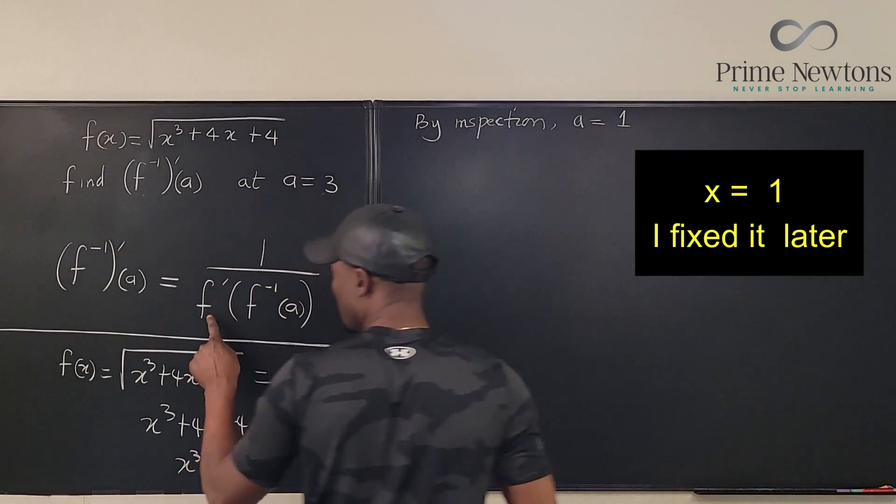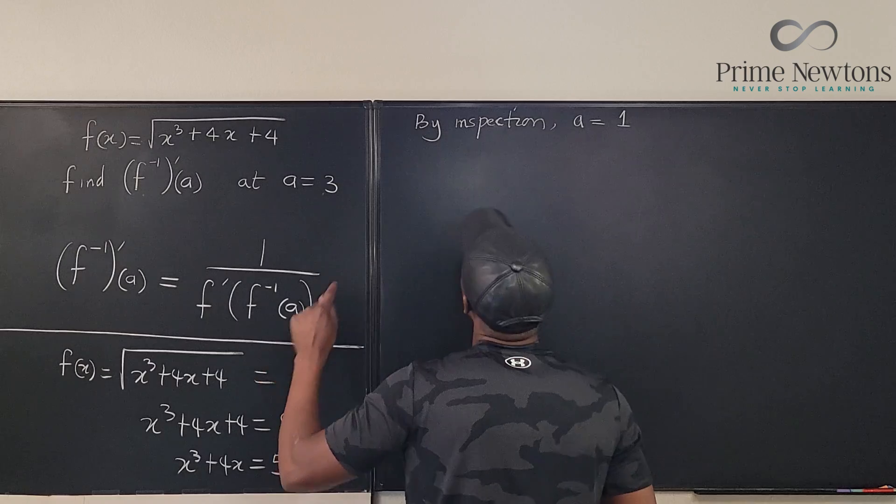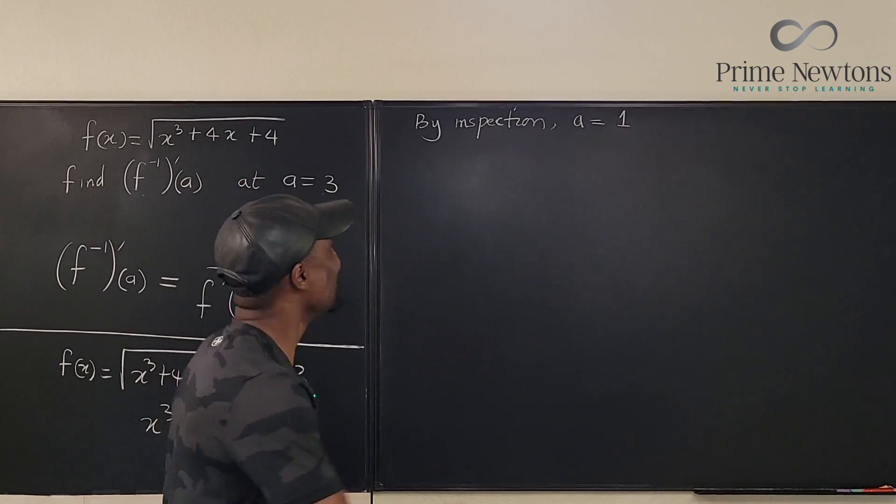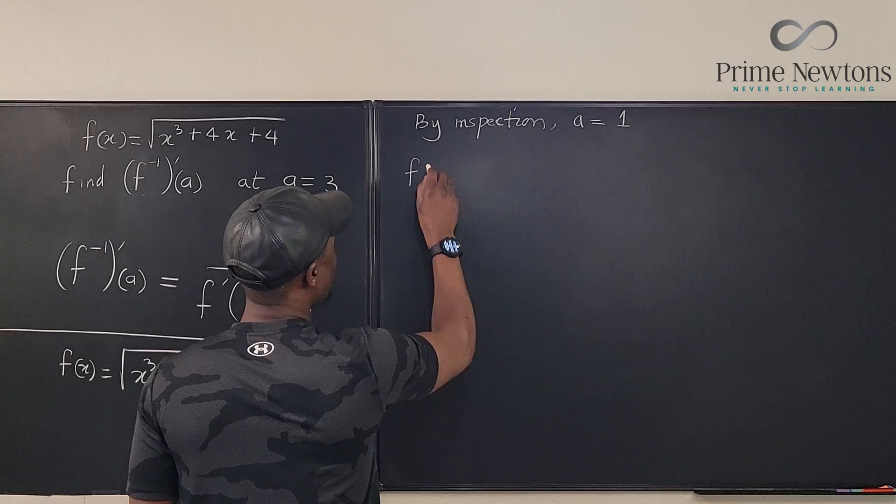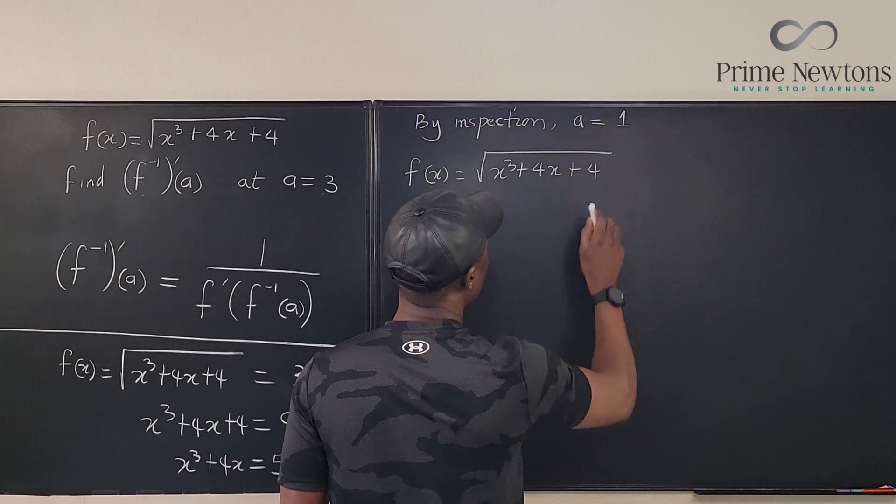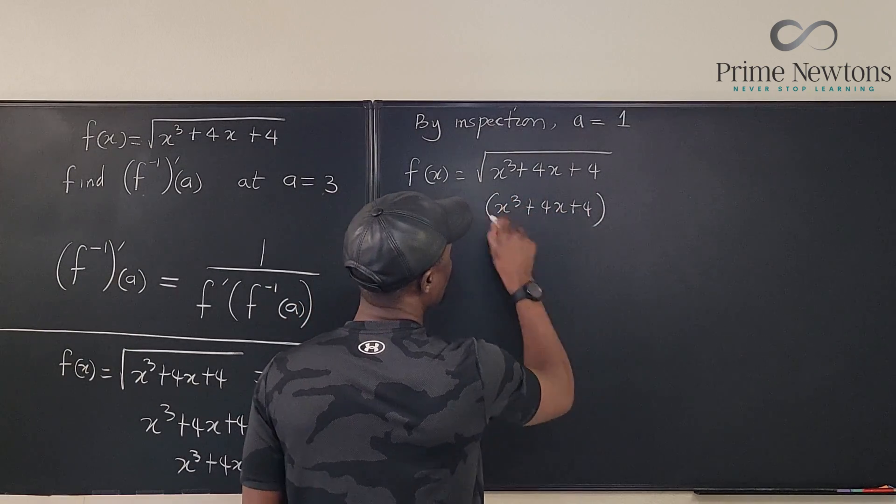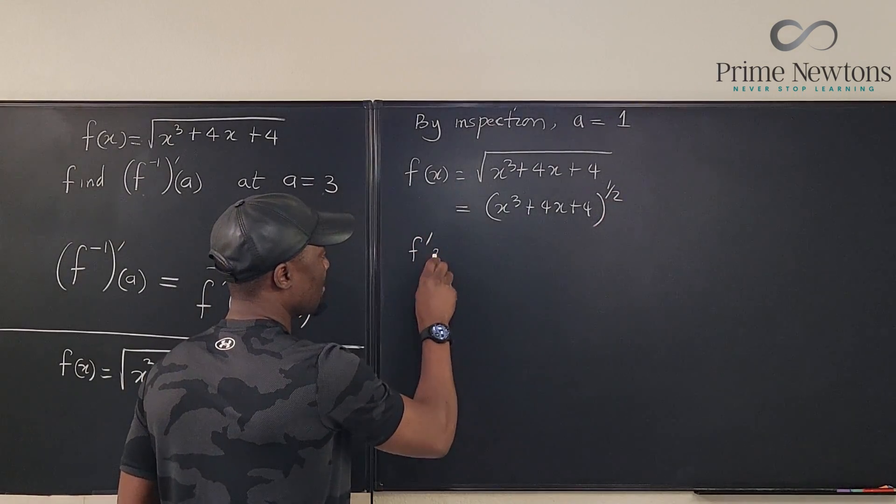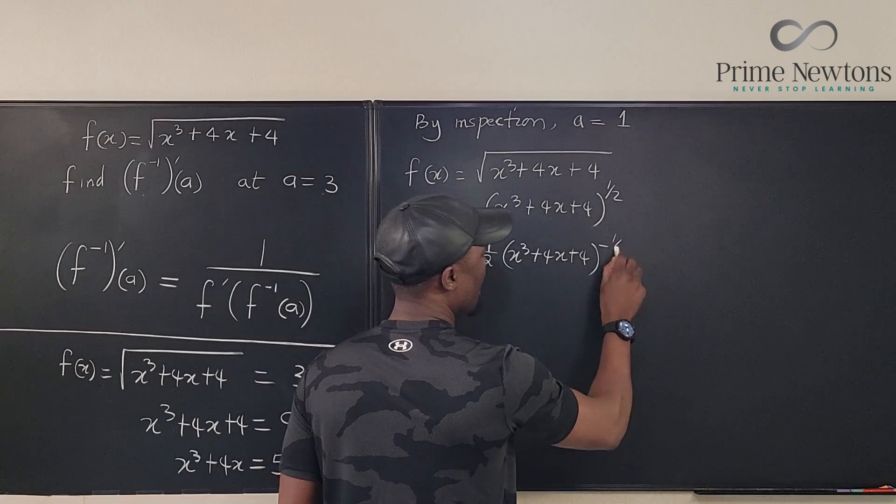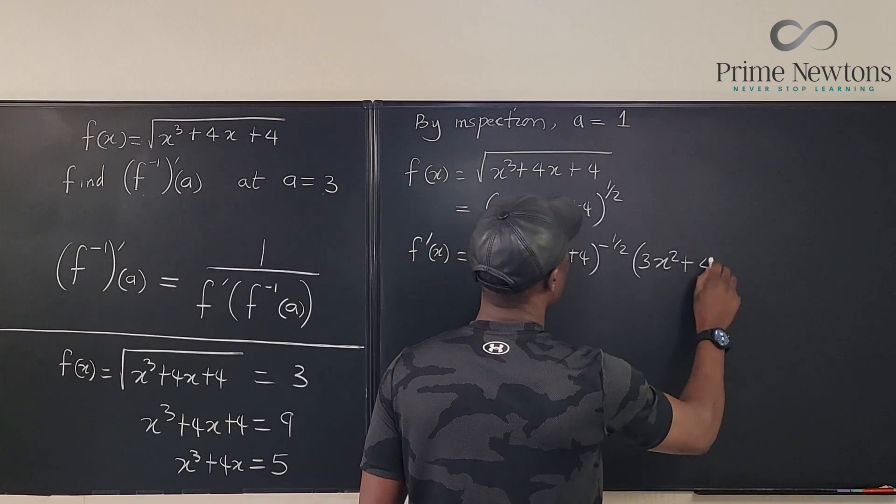The only other thing we need is the derivative of f because it is the derivative of f at a point. So here we're going to say f of x equals x cubed plus 4x plus 4 to the 1 half. So now we can find f prime of x. It's going to be 1 half of x cubed plus 4x plus 4 to the negative 1 half, multiplied by the derivative of the inside, which is going to be 3x squared plus 4.